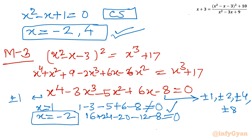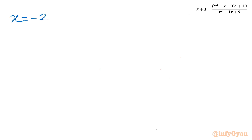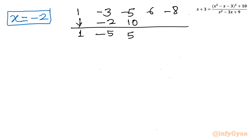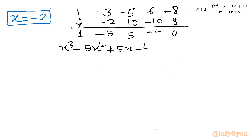Now applying synthetic division with base solution -2 and coefficients 1, -3, -5, 6, -8. Bringing down 1; -2 × 1 = -2, giving -5; -2 × -5 = 10, giving 5; -2 × 5 = -10, giving -4; -2 × -4 = 8, remainder 0. The resulting cubic equation is x³ - 5x² + 5x - 4 = 0.